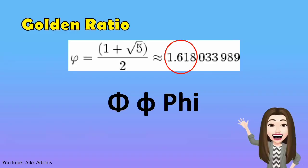represented by the Greek letter phi. In math, the golden ratio is a term used to describe the relationship of two figures where the numbers seem to be in some form of complementary ratio.